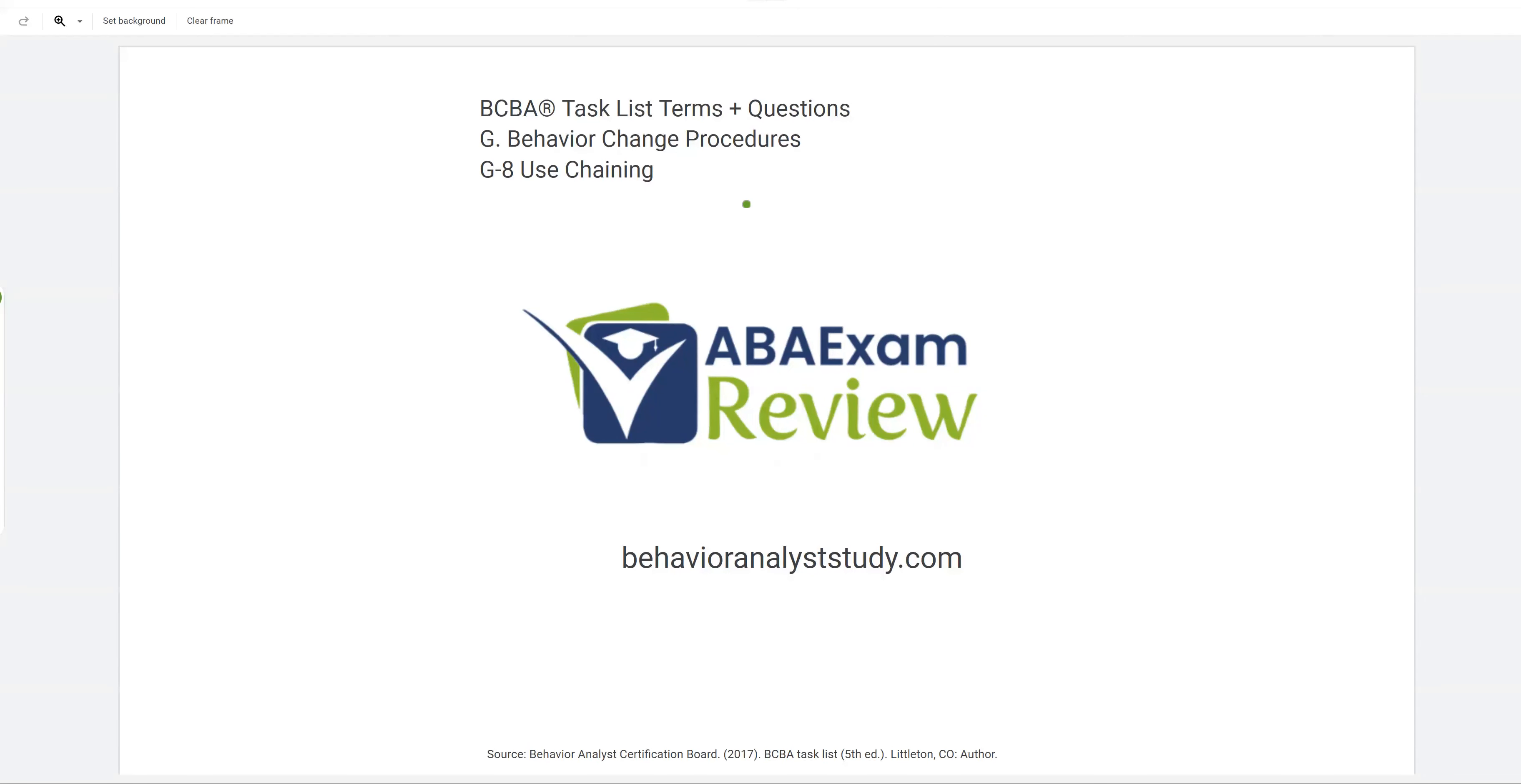All right, welcome back to ABA exam review and the continuation of our BCBA task list series with behavior change procedures and use chaining. Chaining is when we take a complex skill, we break it down into teachable steps, and we teach using a chaining strategy. That analysis we conduct to create that chain is a task analysis. We're going to go over both ideas today. As always, check out behavioranalyststudy.com for all of our study materials.